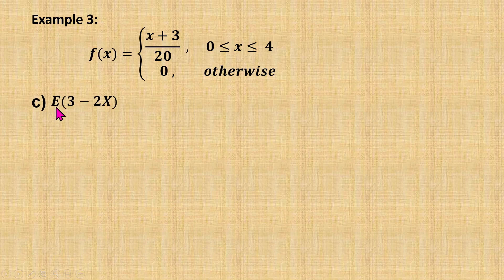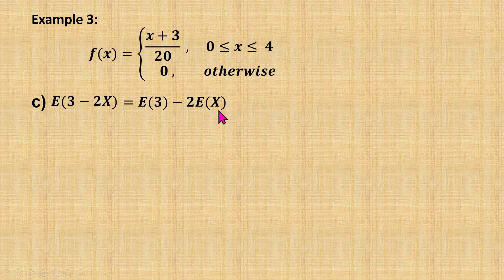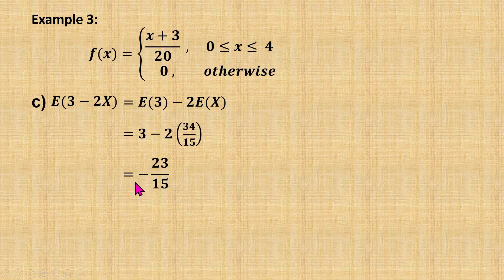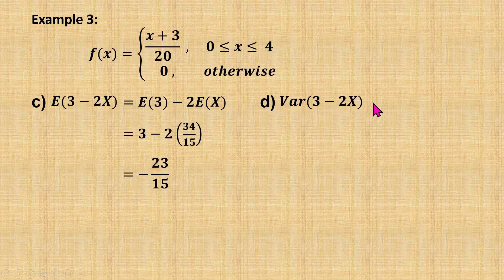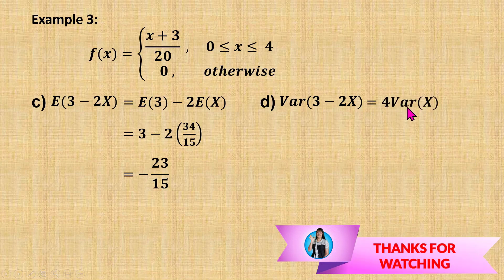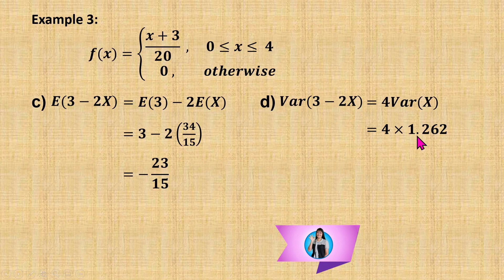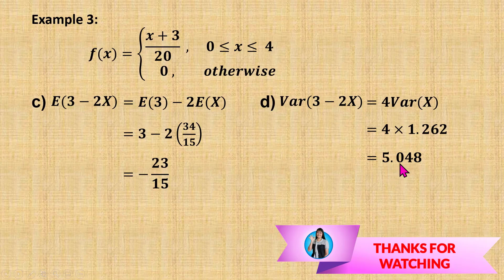Next, we find the value of E(3 − 2X). This can be separated into E(3) minus 2 times E(X). E(constant 3) equals 3, and E(X) is 34 over 15. So E(3 − 2X) equals negative 23 over 15. Then, variance of 3 minus 2X equals 2 squared, which is 4, times variance of X. The value of variance of X is 1.262, so multiplying by 4 gives 5.048.